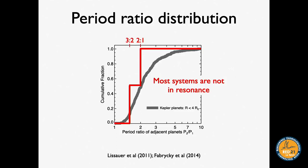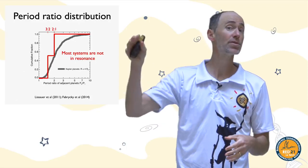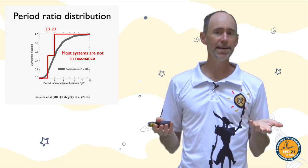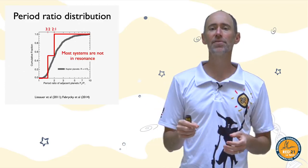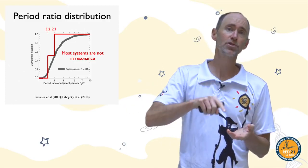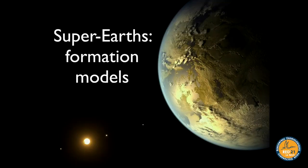What's most interesting about this distribution is not what it looks like — it's what it doesn't look like. It does not look like a staircase. Many people expected a staircase because orbital mean-motion resonances between planets — ratios of integers like 3:2, 2:1, or 4:3 — were thought to be common. If half of pairs were in 3:2 resonance and half in 2:1, you'd get that red staircase, but instead you get the smooth gray line. This is key information.